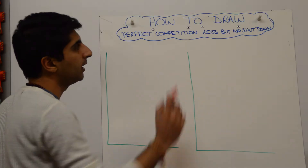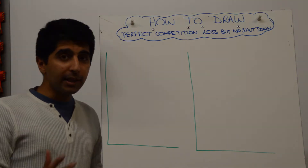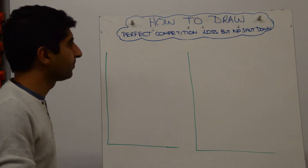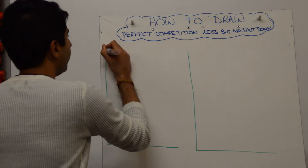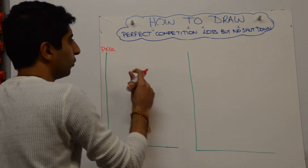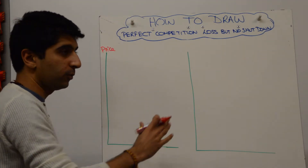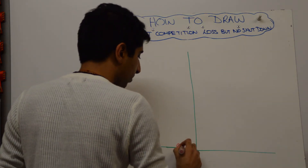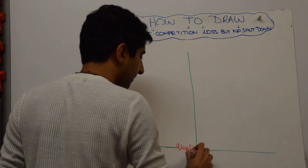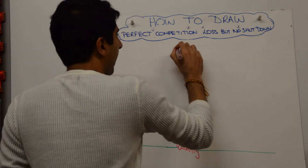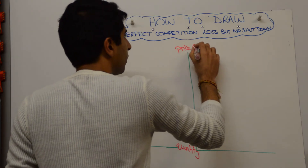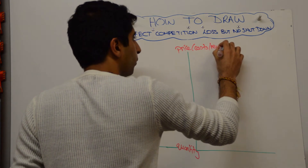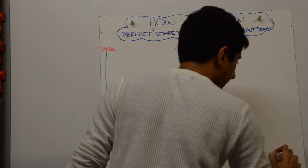We're going to show here when firms are making a loss in the short run but continue to produce. We have to draw two diagrams next to each other — the market here and the individual firm there. For the firm, label the y-axis as price, costs, and revenue — you must do all three — and quantity on the x-axis.